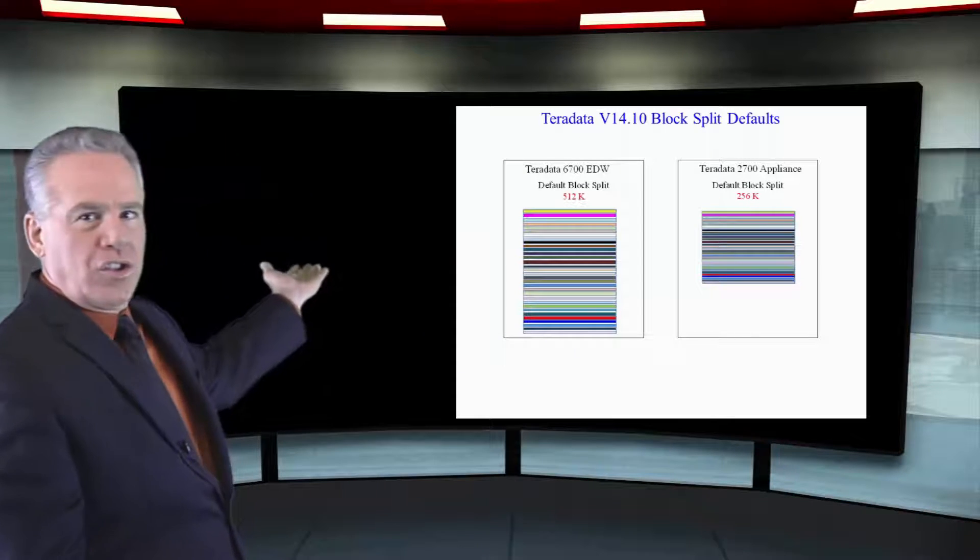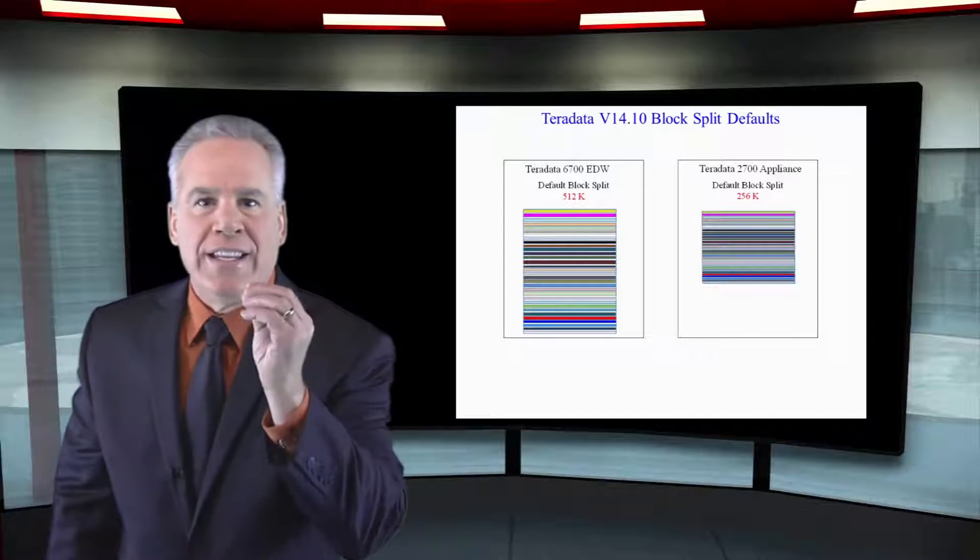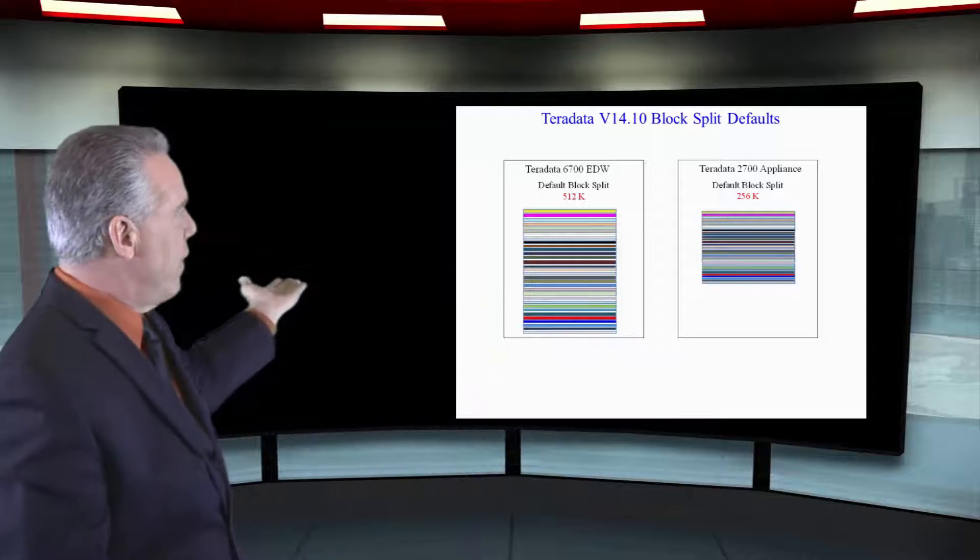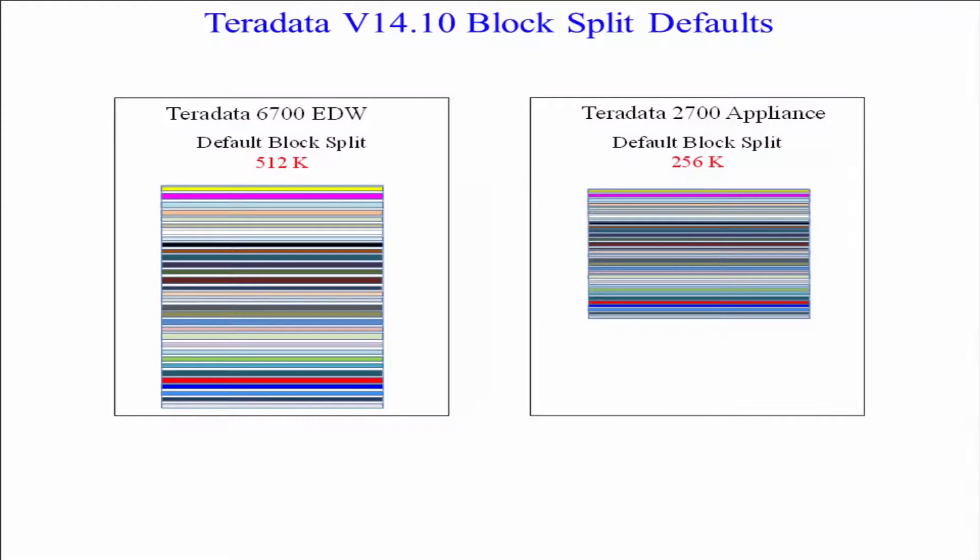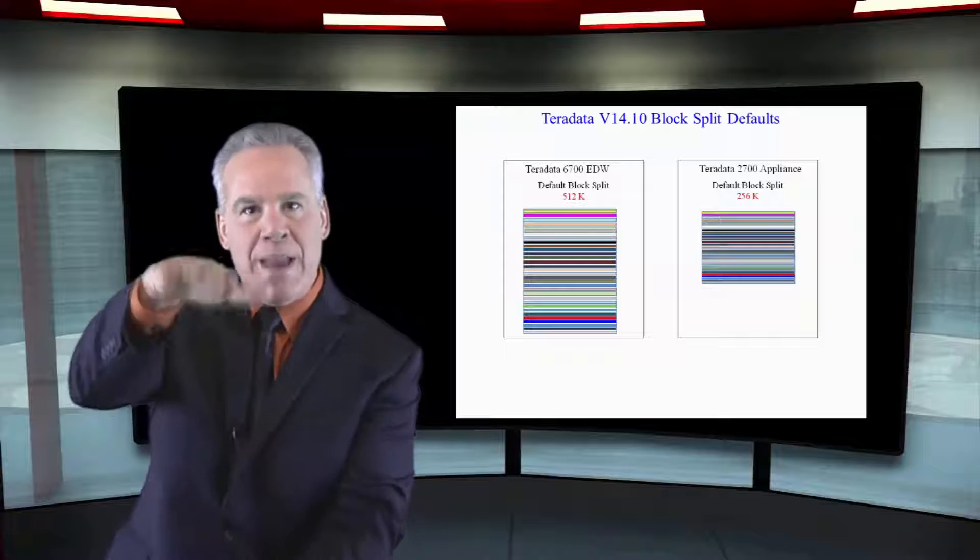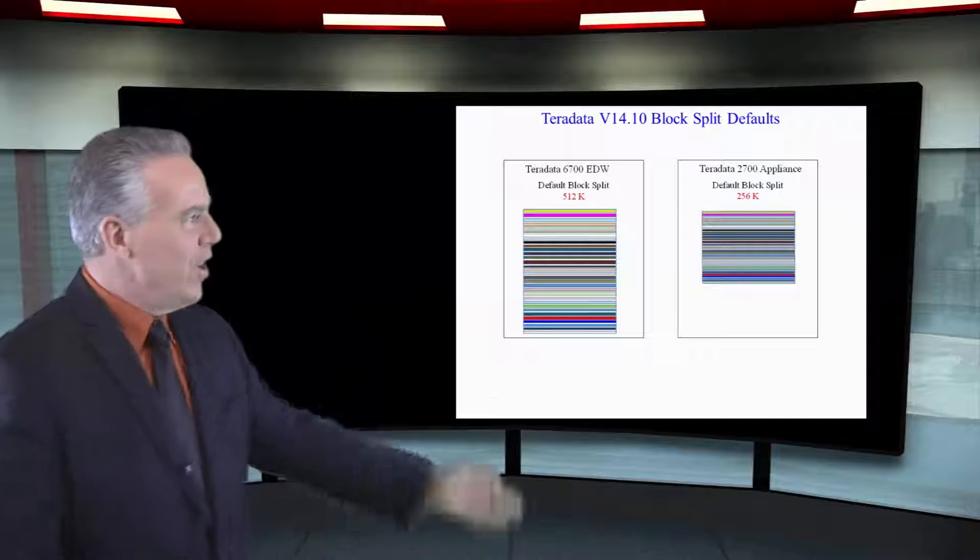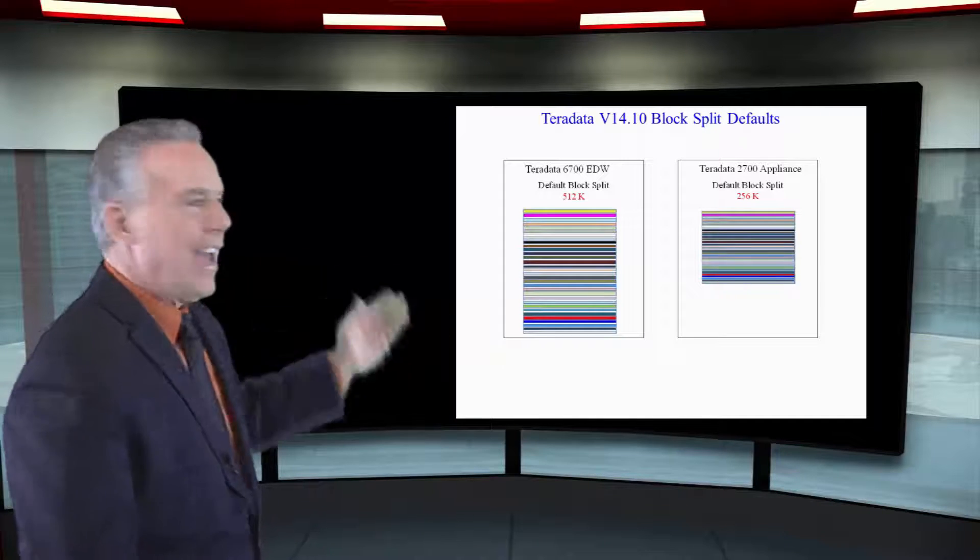For example, if you have a large system, an enterprise system, like a 6700, then you're going to have a default of about 512k before it splits. Then, you can say, hey, wait, I want it to be the maximum of a meg, but by default when the system is set up, if nothing is done at 512k, it's going to split. And, on the smaller systems, that's cut in half to 256k when it'll split. Again, you can say, nope, I want it to be a megabyte, but by default, as you can see, based on system size, you'll have block splits at different levels.